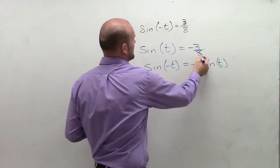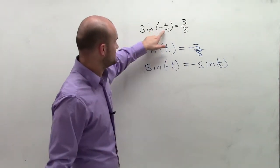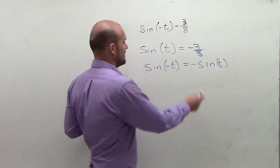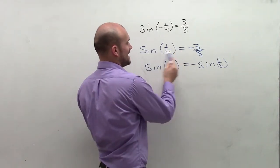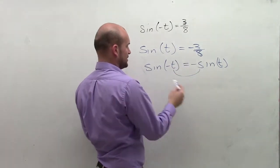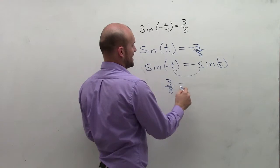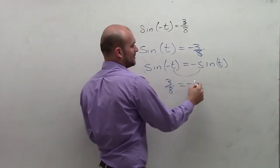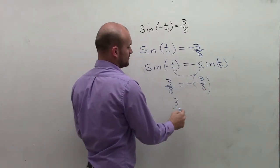Let's take a look at it and see how this is really going to make sense. Think about it: sine of negative t equals 3/8, and if sine of t equals negative 3/8, since these have to be equal to each other — if that's 3/8, then that has to equal a negative. Well, a negative what? It would have to be negative 3/8 for these two to be equal.